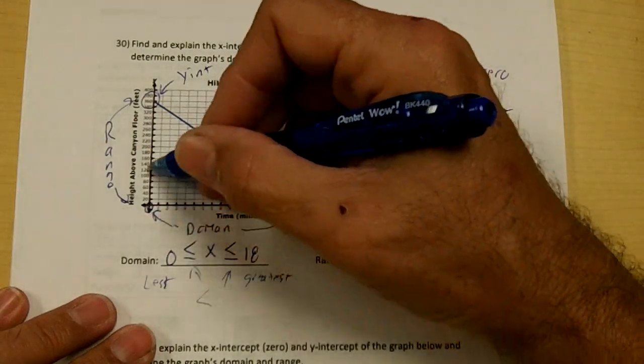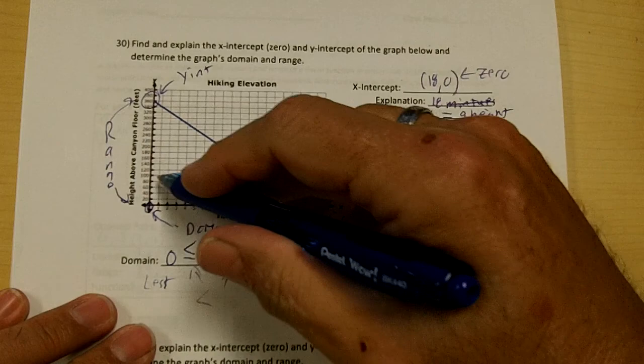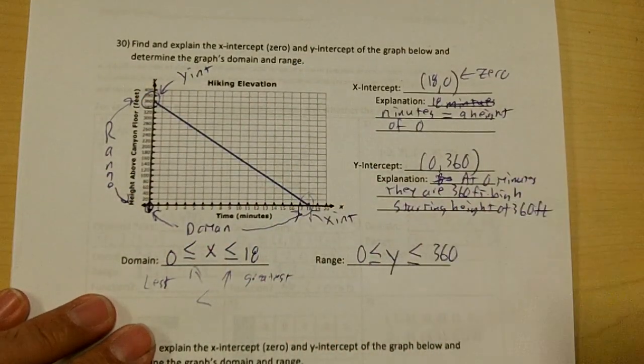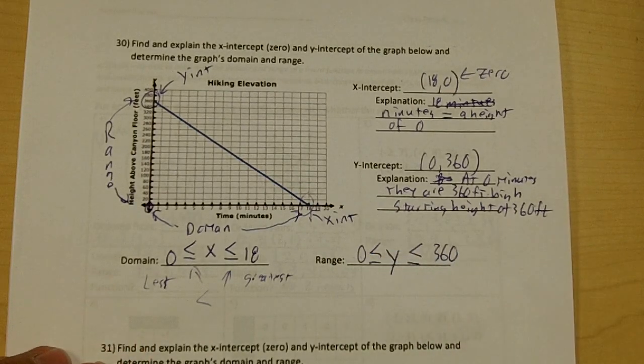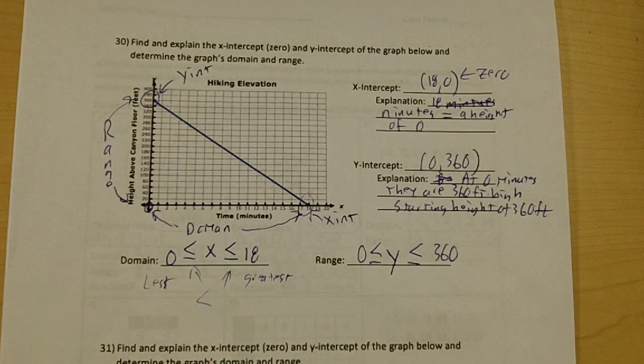So my height is going to start at zero and go to 360. But my height is not x, it's y. My range is, and I'm going to use less than or equal symbols. So this is how you write any number between zero and 360. This is how you write any number between zero and 18. Real, real simple.